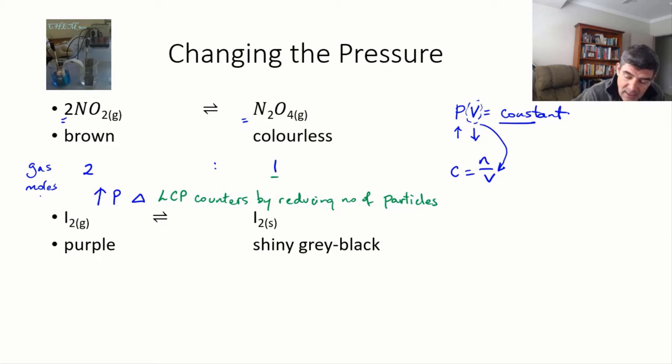In this case, the right-hand side has just one particle, where the left-hand side has two. So if we increase pressure, we're going to push this equilibrium to the right. Therefore, shift right.